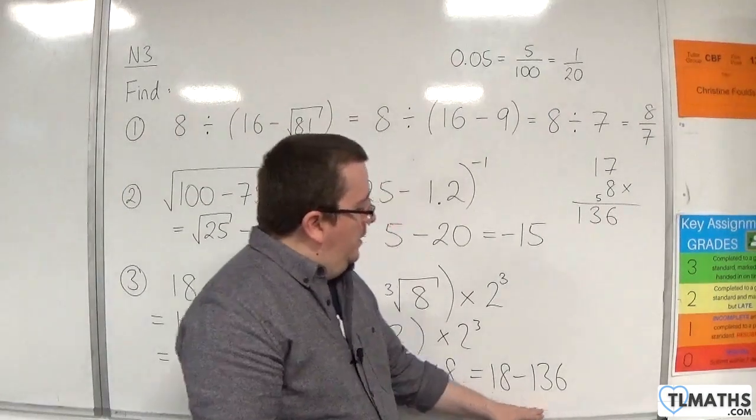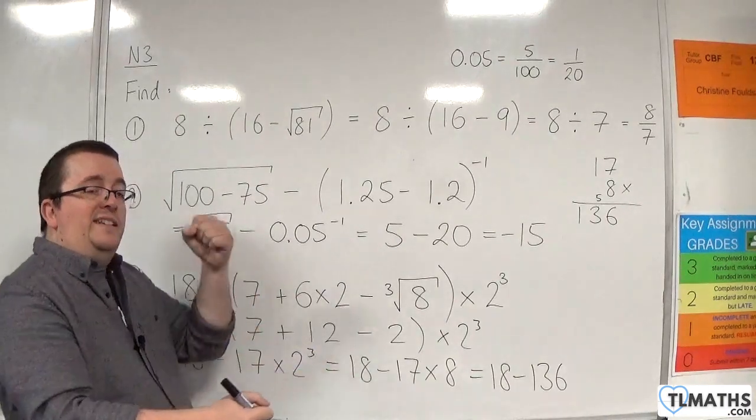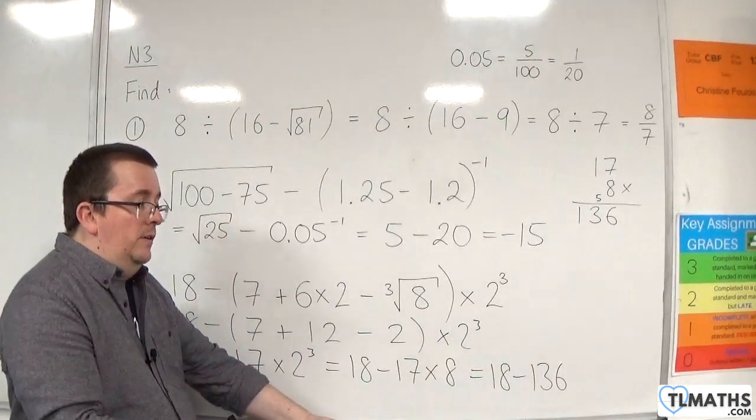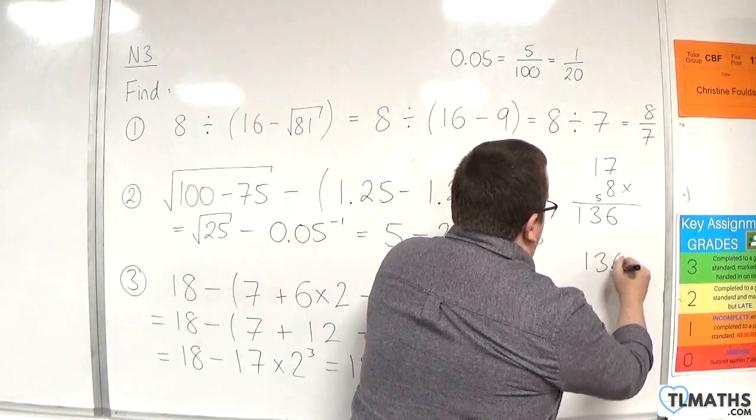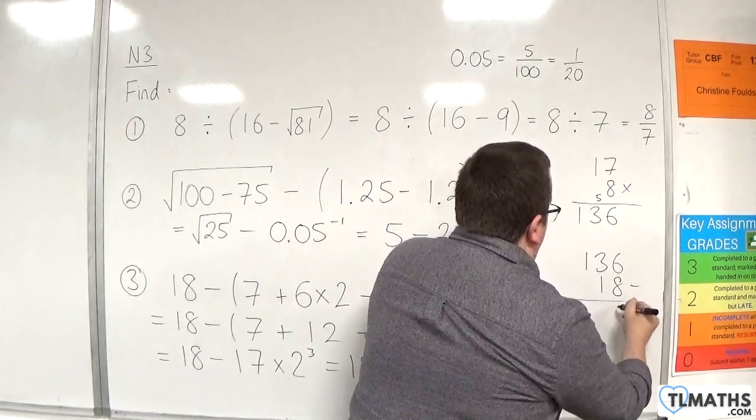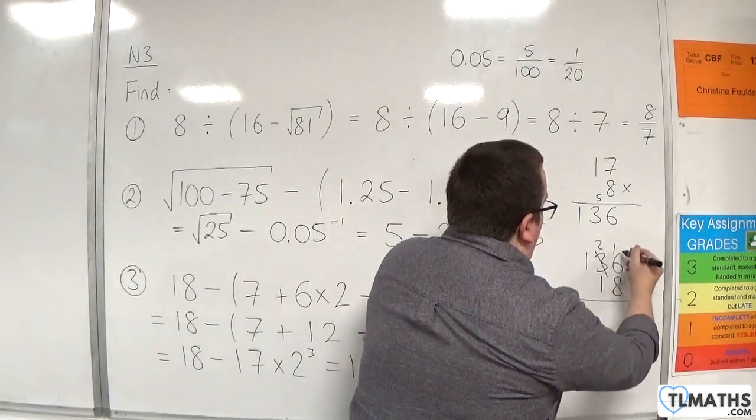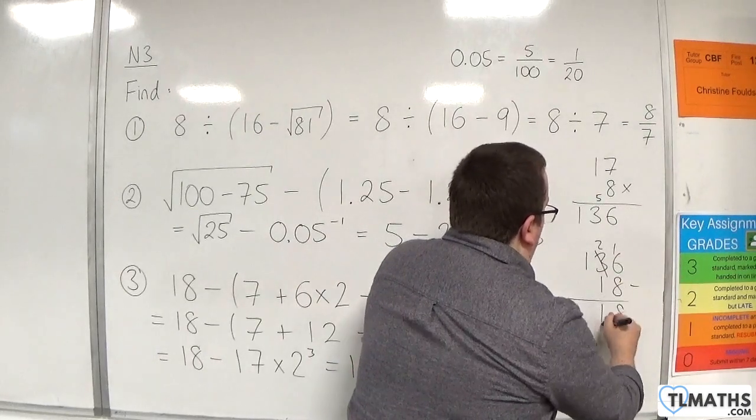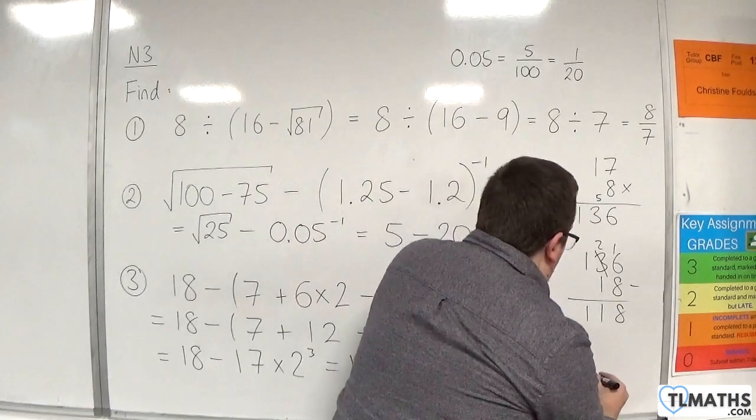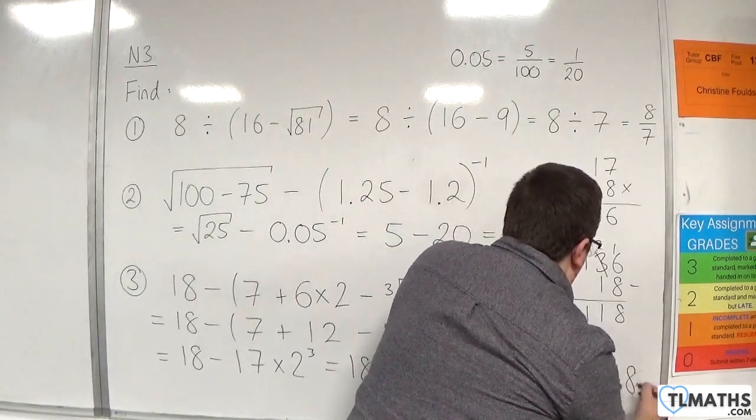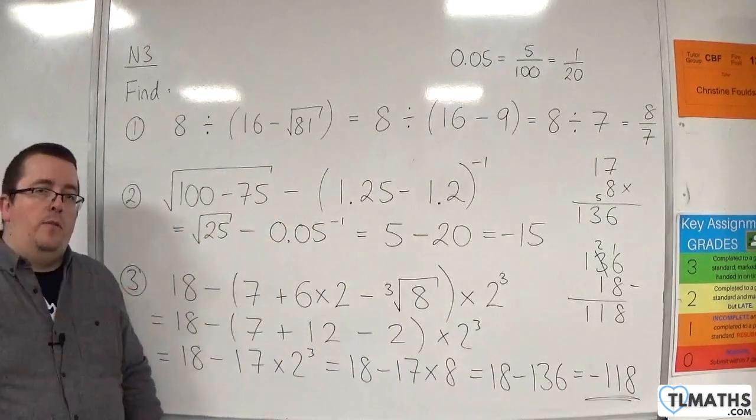Now, if you remember, to do that type of calculation, we can do 136 take away 18 and then we put a minus sign at the front. So 136 take away 18: 6 take away 8, I can't do that, so I'm going to have to borrow 1. 16 take away 8 is 8, 2 take away 1 is 1, and we've got the 1, so it's 118. Our final answer is minus 118. And that is my answer for number 3.